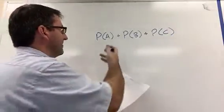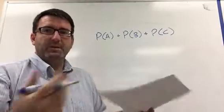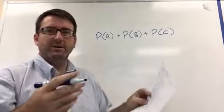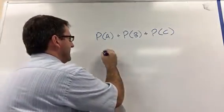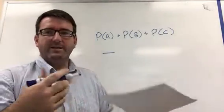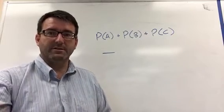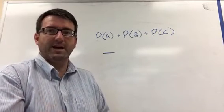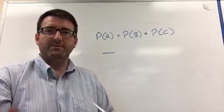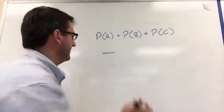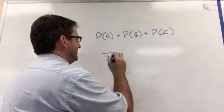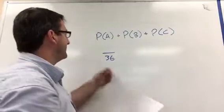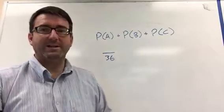So the probability of getting a 3 if we roll two dice. First of all, the total number of outcomes is going to be 6 times 6 because there's 6 different outcomes for the first die and 6 different outcomes for the second die. We multiply those together and get 36 different outcomes.